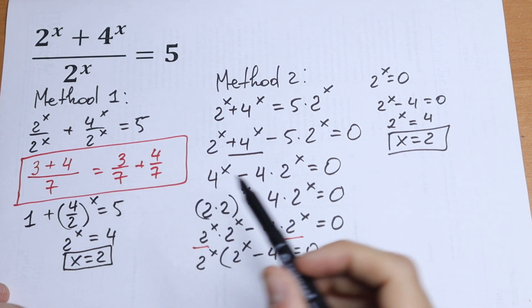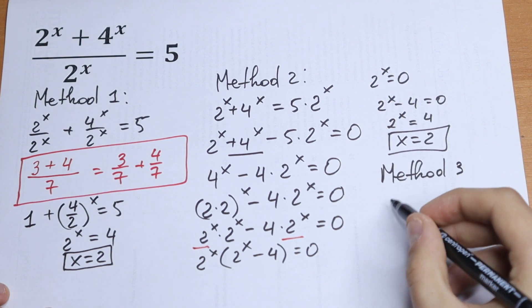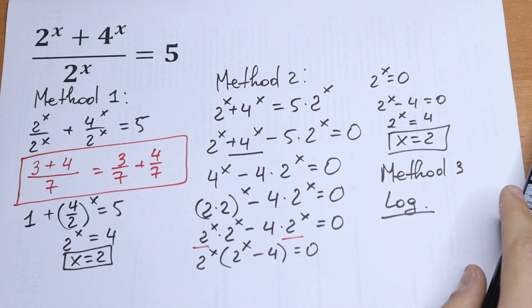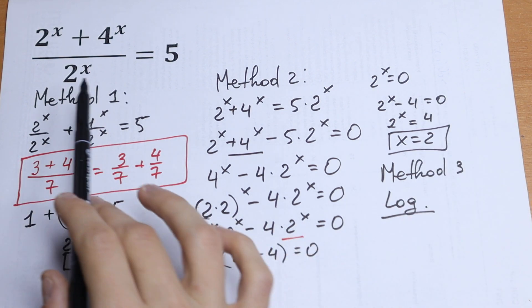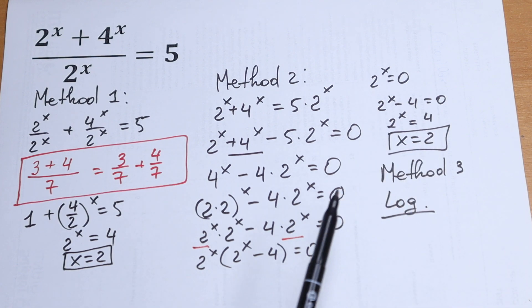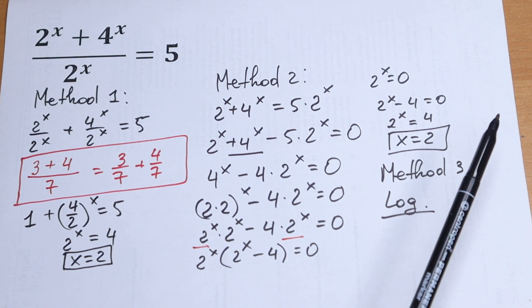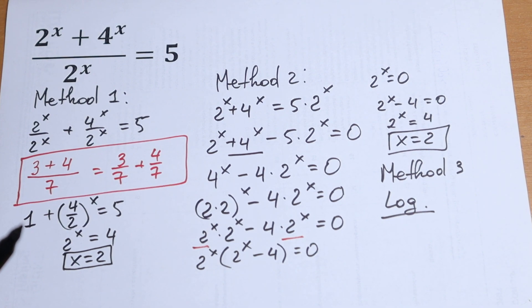The third method uses logarithm — it is the longest one, but it will improve your log skills. You can solve it in a comment and write your answer there. So the answer is x equals 2. If you agree or disagree with these methods, it would be really interesting to read your answers in the comments. Thank you for watching, for subscribing, and for the thumbs up — I really appreciate it. See you in the next videos.